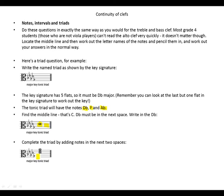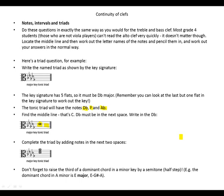Complete the triad by adding notes in the next two spaces: we have D flat, we have F, and we have A flat — not just A, but A flat. Don't forget to raise the third of a dominant chord in a minor key by a semitone (half step). In E minor, the dominant chord is E major, so it's E, G sharp, and A — that's your triad.